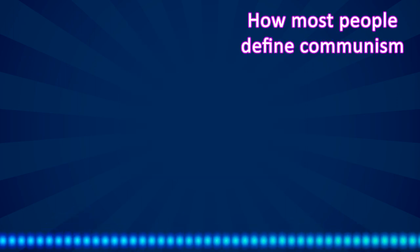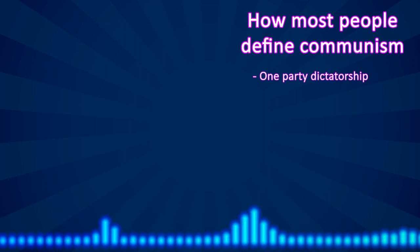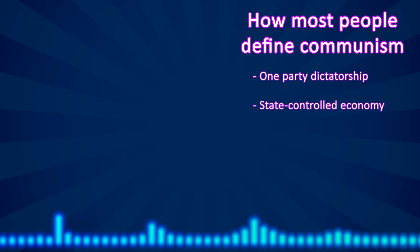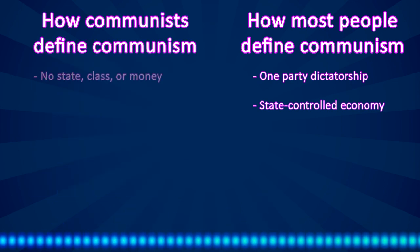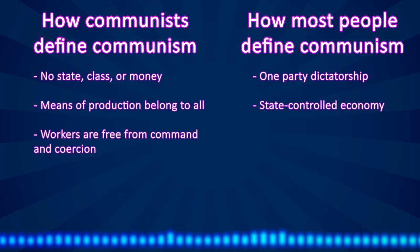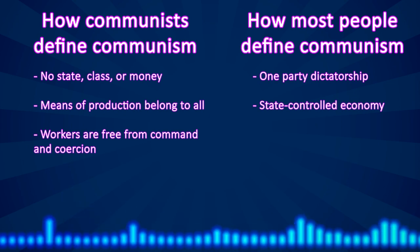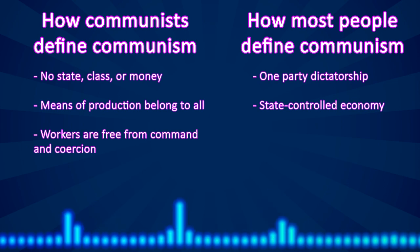So that is a very basic definition of communism as it is defined by communists. On the one hand, most people define communism as a society where one single party controls the state and the state controls the economy. On the other hand, communists define communism as a society where the state does not exist, class does not exist, money does not exist, private or exclusive ownership of the means of production does not exist because the means of production belong to everyone, and command and coercion over workers does not exist — workers are free and liberated. Just look at how extremely different these two definitions are.